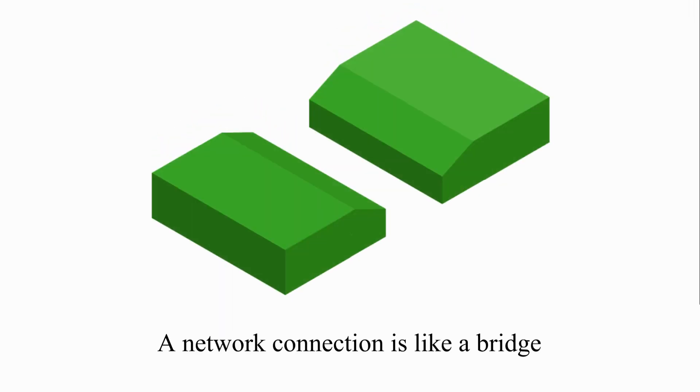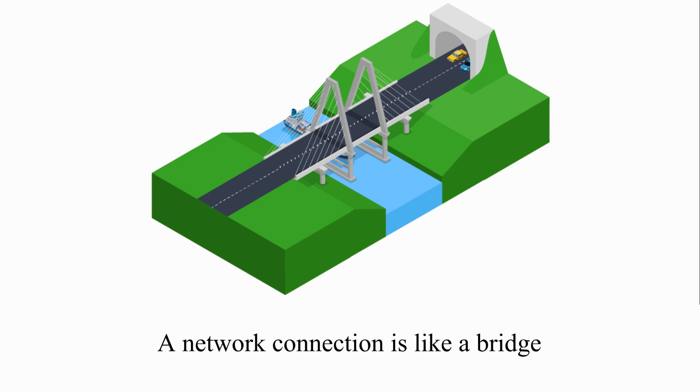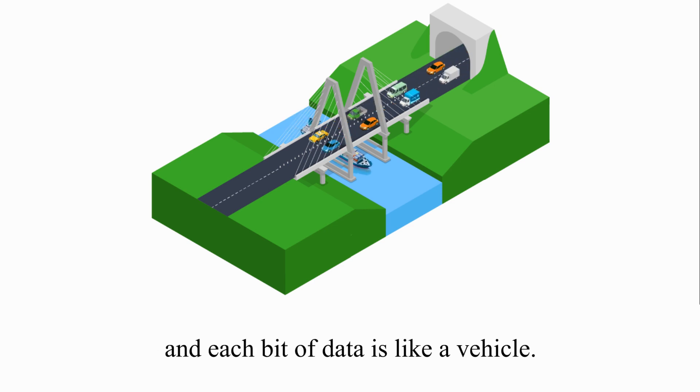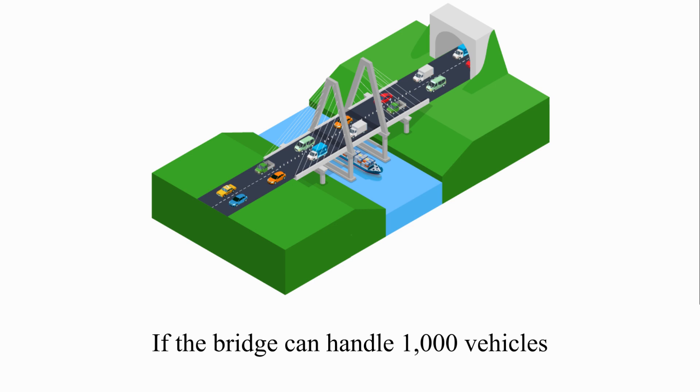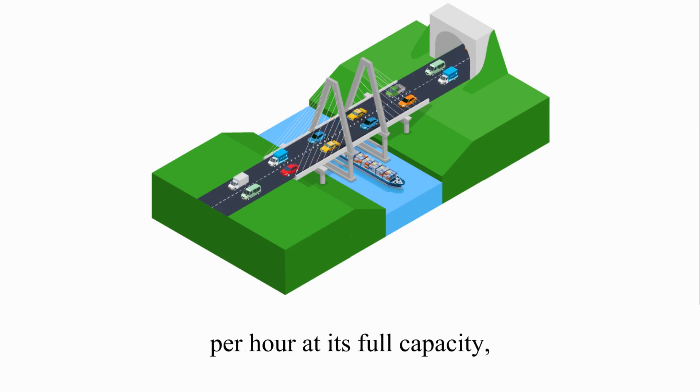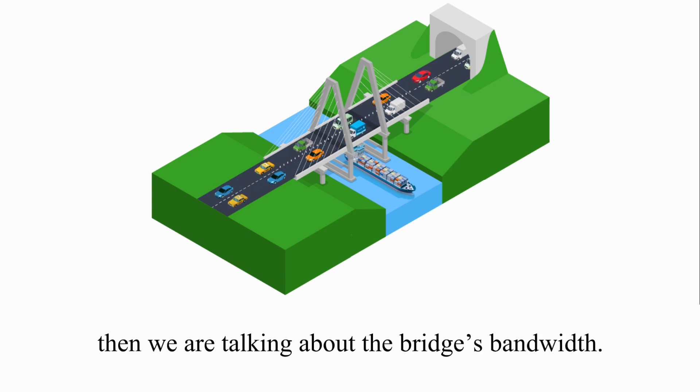A network connection is like a bridge and each bit of data is like a vehicle. If the bridge can handle 1,000 vehicles per hour at its full capacity, then we are talking about the bridge's bandwidth.